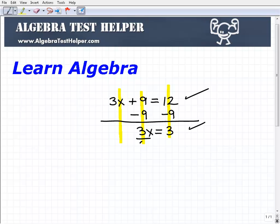The way I do that is divide both sides of the equation by 3. So 3 divided by 3 is just 1, or 1x, or x, and 3 divided by 3 over here is 1.